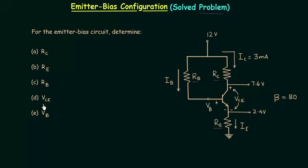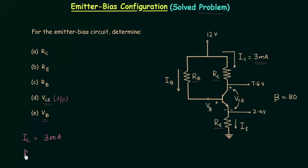We also have to calculate the output voltage VCE and the potential at point B. In this circuit the base current is not given, but the collector current IC is equal to 3 milliamps. Beta, the current amplification factor, is equal to 80. We are using an NPN transistor with base, collector, and emitter terminals identified.